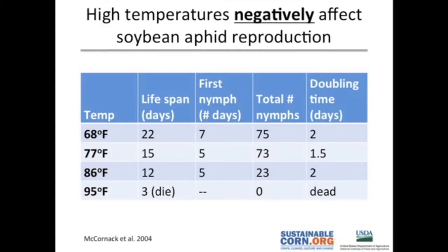Conversely, if you look at soybean aphids, this is work done out of Matt O'Neill's lab at Iowa State University. Looking at the effect of temperature on soybean aphid reproduction — lifespan, days to first nymph, total number of nymphs, doubling time — all of those decrease as temperatures increase. So this would be an example of an insect that would be negatively affected by high temperatures.